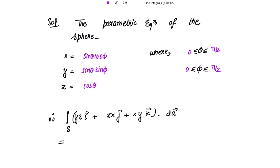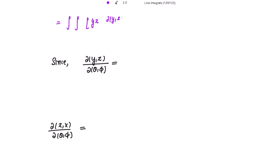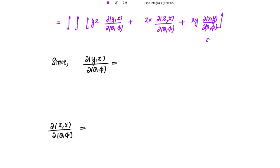This given integral, after the change of variables, equals the double integral over S of: yz · ∂(y,z)/∂(θ,φ) plus zx · ∂(z,x)/∂(θ,φ) plus xy · ∂(x,y)/∂(θ,φ), integrated dθ dφ, where theta ranges from 0 to π/2 and phi also ranges from 0 to π/2.